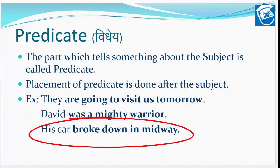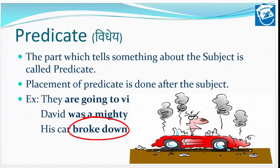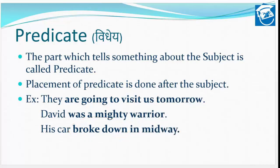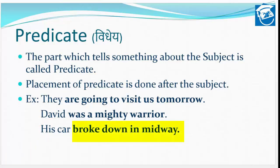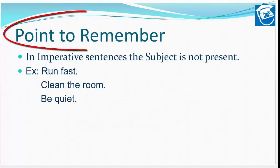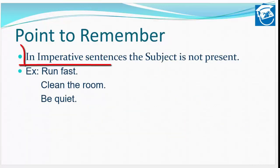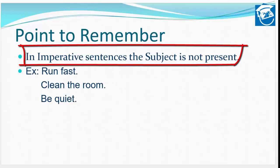And then we have: His car broke down in midway — uski car raste ke beech mein hi kharaab ho gayi. 'Broke down' ka matlab hamesha yeh nahi hota ki kuch cheez todi ja rahi hai; broke down ka arth kabhi kabhi yeh bhi hota hai ki koi cheez kharaab ho gayi. So 'his car' humara subject hai, aur jo screen pe bold letters mein dikh raha hai — 'broke down in midway' — jo car ke baare mein aur adhik jaankari de raha hai, woh ban jata hai vidhey.